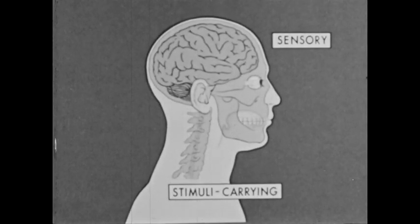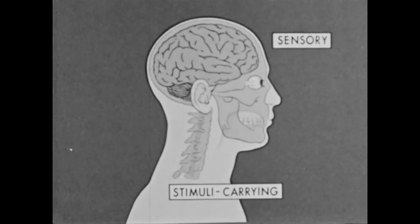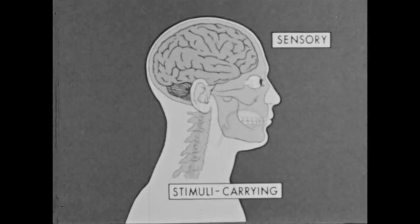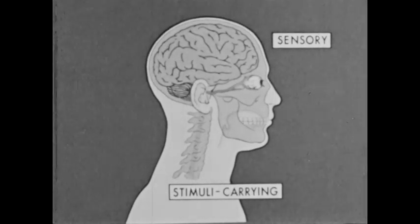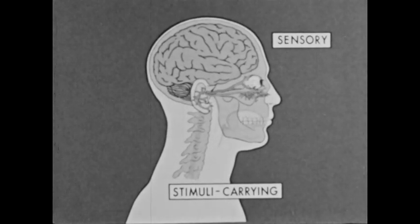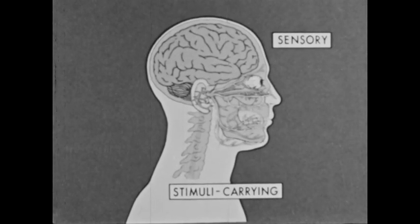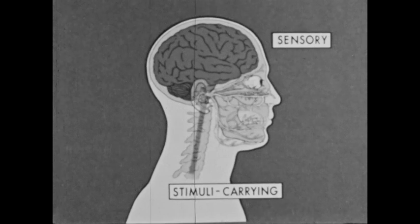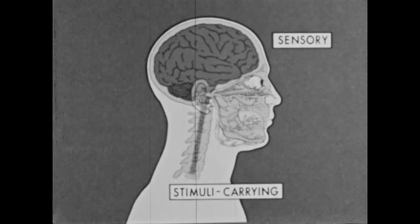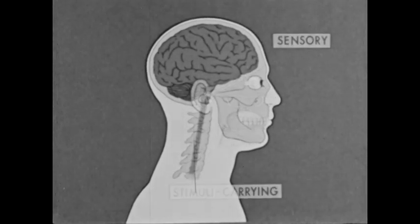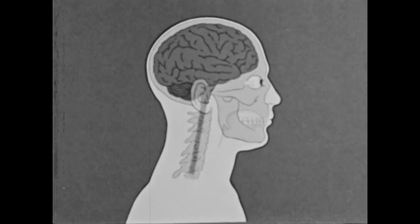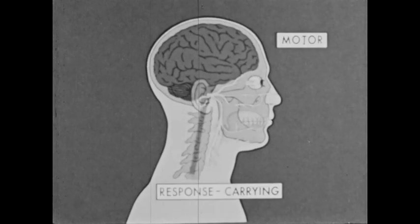There are many sensory or stimuli-carrying nerves around the sense organs of the body. Sensory nerves may be found around the eyes, nose, ears, mouth, and skin. All sensory nerves terminate in the spinal cord or brain.